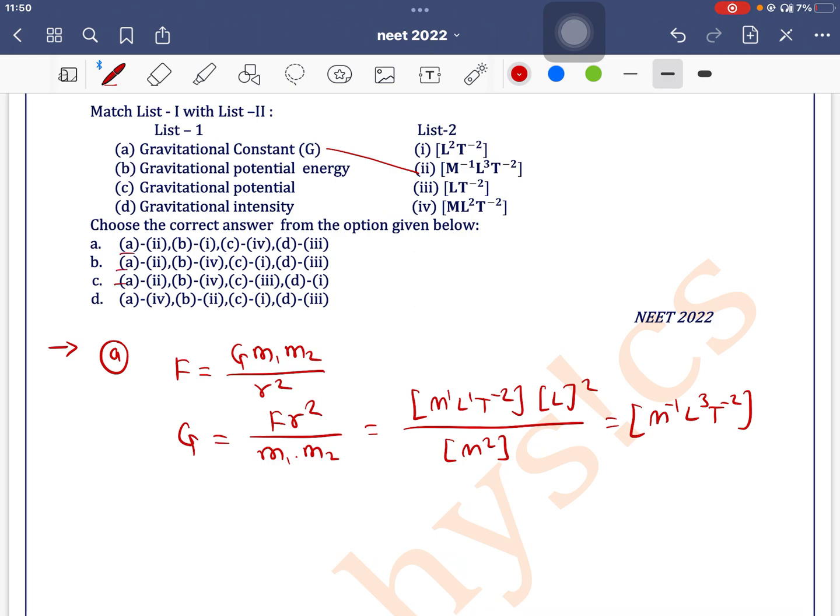Now we can solve for b, gravitational potential energy. Now you can use any formula related with the potential energy. Dimension of potential energy is equal to